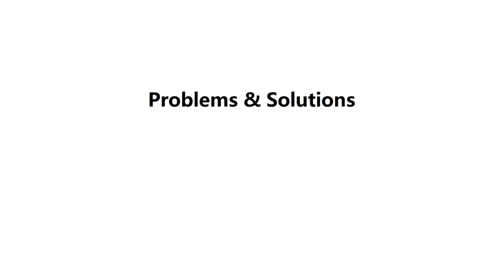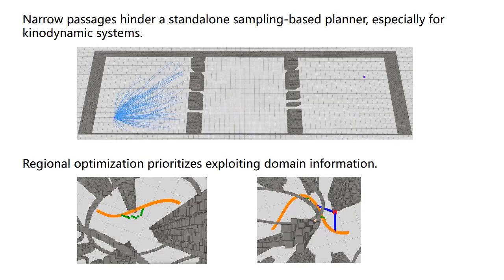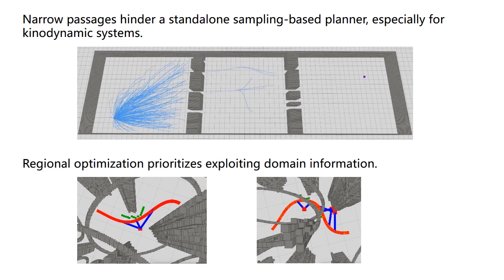We now address the problems and solutions. Usually narrow passages hinder a standalone sampling-based planner, especially for kinodynamic systems.